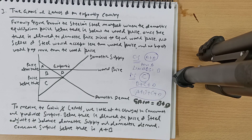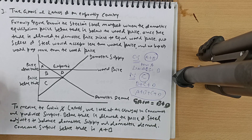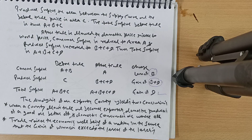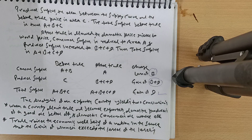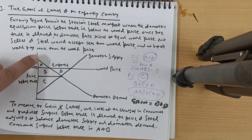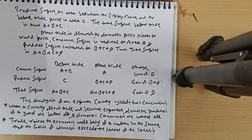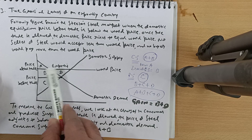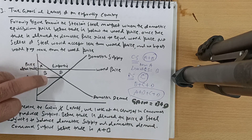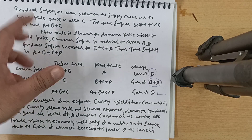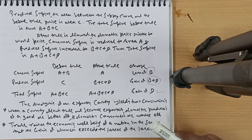To summarize the gains and losses: before trade, consumer surplus was A plus B, producer surplus was C, and total surplus was A plus B plus C. After trade is allowed, the domestic price rises to the world price. Consumer surplus becomes A, producer surplus becomes B plus C plus D, and total surplus becomes A plus B plus C plus D. This is shown clearly in a table.